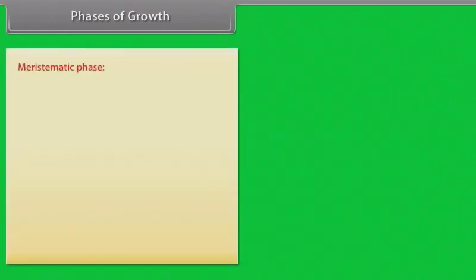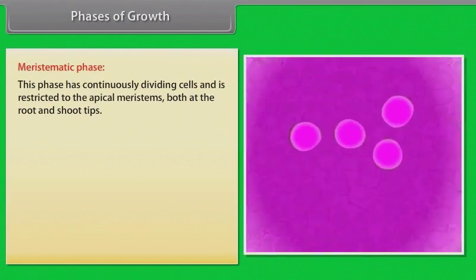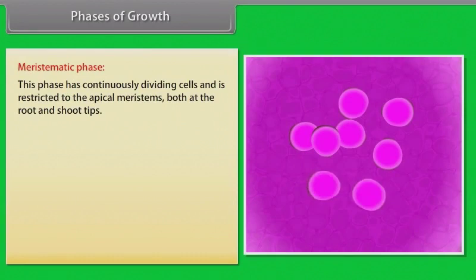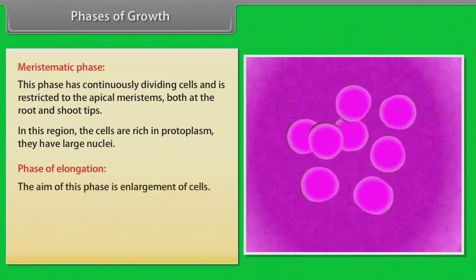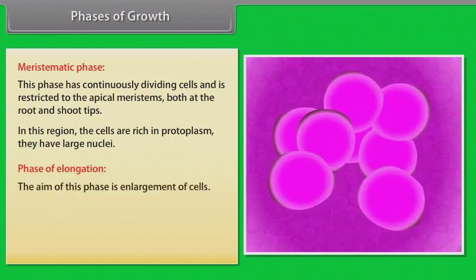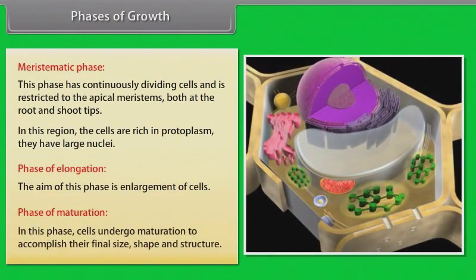Meristematic phase: This phase has continuously dividing cells and is restricted to the apical meristems, both at the root and shoot tips. In this region, the cells are rich in protoplasm and have large nuclei. Phase of elongation: The aim of this phase is enlargement of cells. Phase of maturation: In this phase, cells undergo maturation to accomplish their final size, shape and structure.